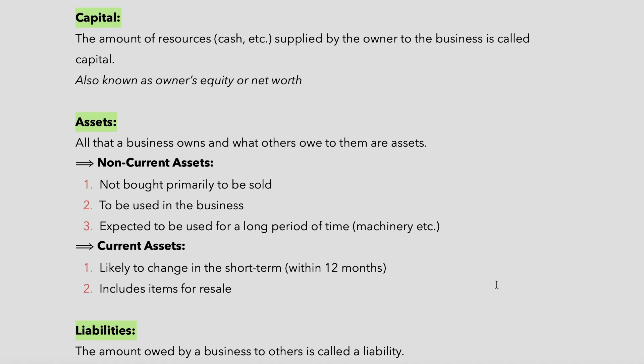Assets are further broken down into non-current assets and current assets. Non-current assets are assets not bought primarily to be sold — like the delivery car example — but to be used in the business over a long period of time. Current assets are likely to change in the short term, within 12 months. These include inventory, cash at hand, cash at bank, trade receivables, and more.